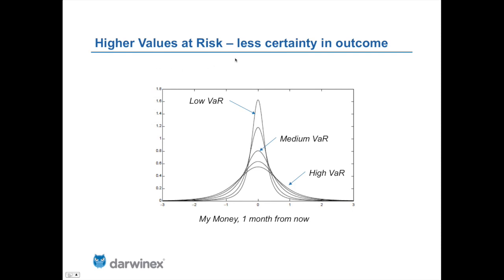What do higher values at risk actually mean? Basically, they mean less certainty in outcomes. An investor in a high VaR strategy could experience larger deviations at the tail, whereas an investor with a lower VaR would be much more centered around not making or losing much. This is why we use VaR to compare strategies.